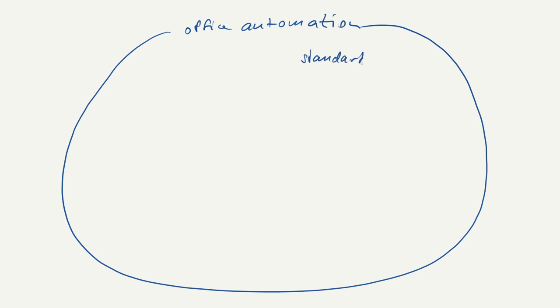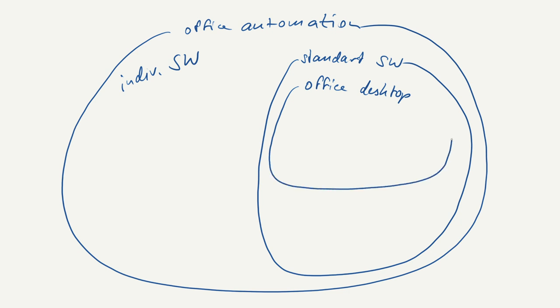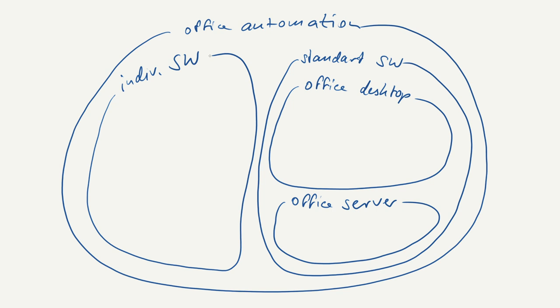And if we look at the standard software part, we can divide that again into office software on the desktop, which is used by one user typically, and the other part is office software on a server where several people are working together with a central database. And in the first category, the office software on the desktop, we have word processing, spreadsheets, slides, etc. Something that's done very often now with Microsoft Office, for example. So this name fits very well.